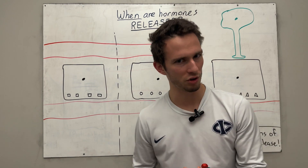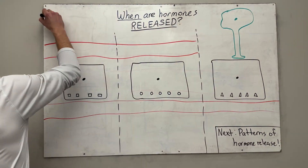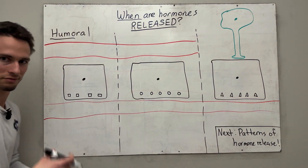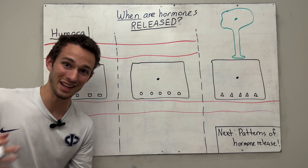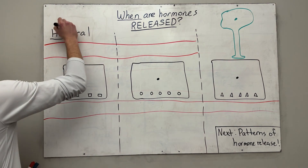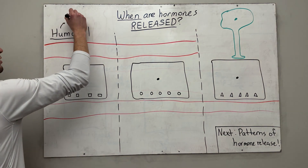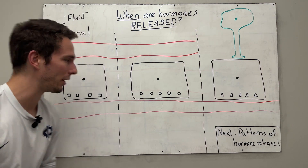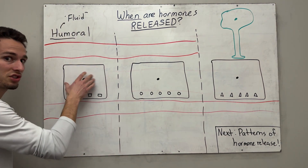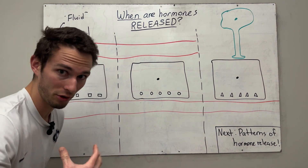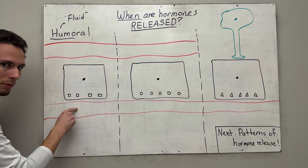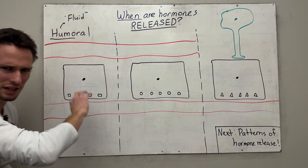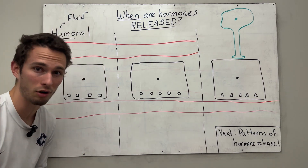The first way is called a humoral response. Now humor doesn't mean laughter and funny — although you get that on this channel — but humor actually means fluid, usually fluid with some sort of stuff dissolved in it. So a humoral response is when an endocrine cell, a hormone-releasing cell, will release its hormones when something in fluid is off — too high or too low.